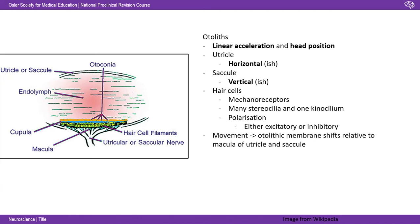The utricle detects, roughly speaking, horizontal acceleration, and the saccule is pretty much vertical. How does it do it? It's these hair cells, which are mechanoreceptors. They have many stereocilia and one true kinocilium, and they polarise as they get shifted about. It's a bit like if you're driving in a car and someone slams on the brakes — your body moves slower than the car. That's how the otolithic membrane works, pushing the hair cells one way or another, causing them to be either excitatory or inhibitory.